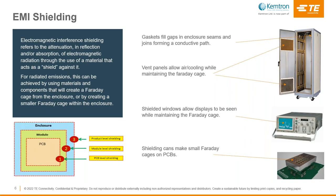For radiated emissions, EMI shielding can be achieved by using materials and components that create a Faraday cage around the electronics. This can be created at the enclosure level where the outer enclosure becomes a Faraday cage, at a module level by creating a smaller Faraday cage within the enclosure, or at the PCB level by using shielding cans to create a Faraday cage around an individual component or a group of components on the PCB.